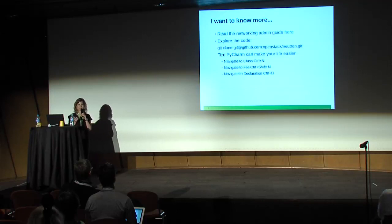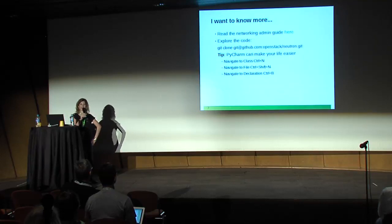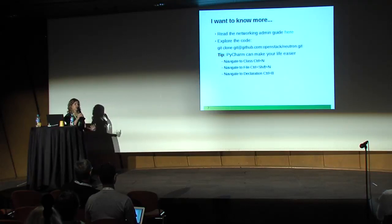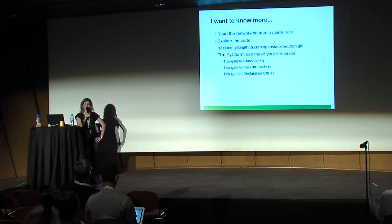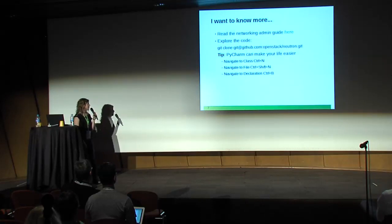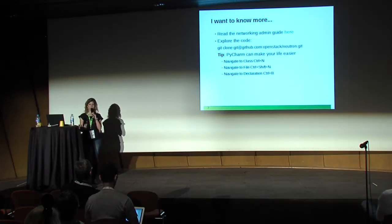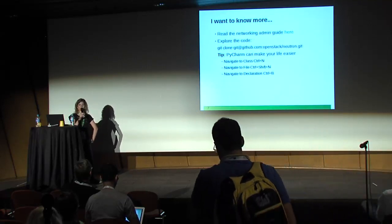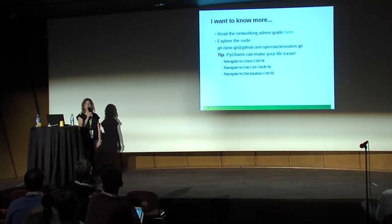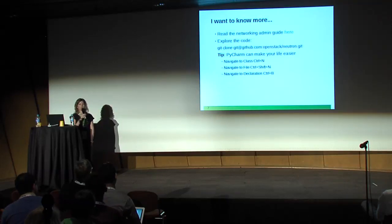These slides are not enough, and there's a networking admin guide where you can learn more about Neutron internals and configuration. Since most of us are software developers who like to go straight to the code, I suggest you clone the Git repo for Neutron and start navigating through it. I personally recommend PyCharm — it's very handy when going through code you don't know well. Useful shortcuts include Control+N to navigate to a class, Control+Shift+N to open a file, and Control+B to jump to a declaration.